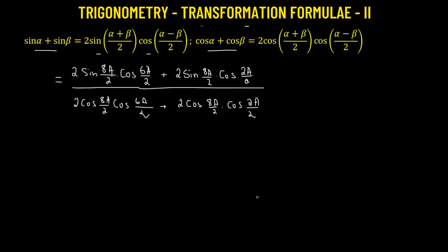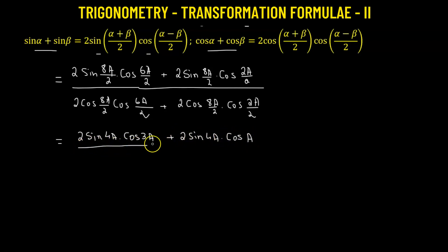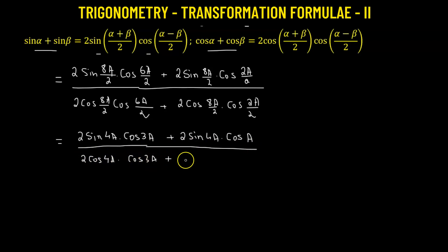Let's further simplify. We get 2 times sine of 4a, multiplied by cosine of 3a, whole divided by 2 times cosine of 4a times cosine of 3a, plus 2 times cosine of 4a times cosine of a.